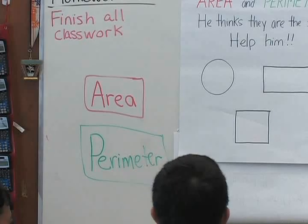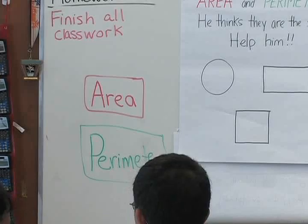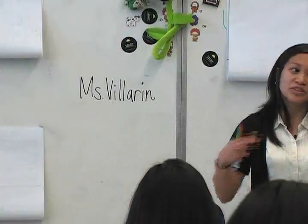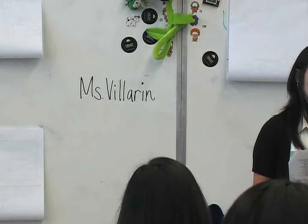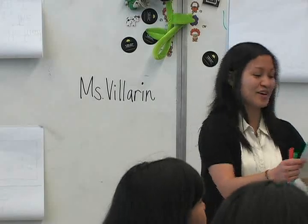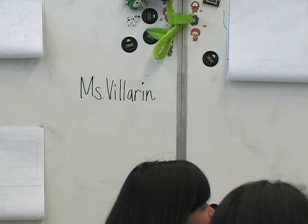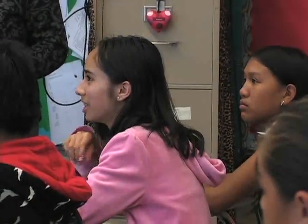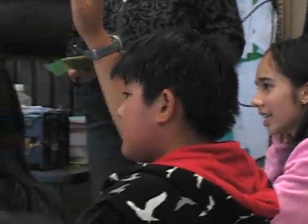Did everyone have a chance to talk about it? Who would like to explain what you would say to Robbie to tell him the difference between area and perimeter? Angelique — for area it would be length times width, and for perimeter it would be length plus width. Is there anybody else that would like to add to what Angelique said? Alex — the area is what's inside, and the perimeter is what's outside. So the area is what's inside and the perimeter is what's outside.